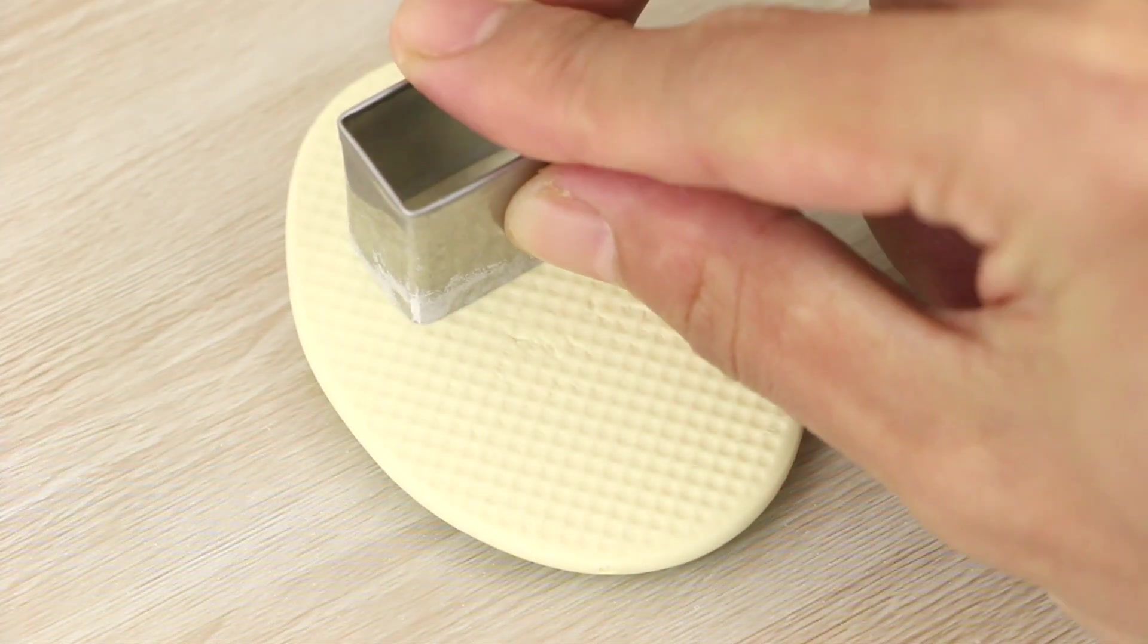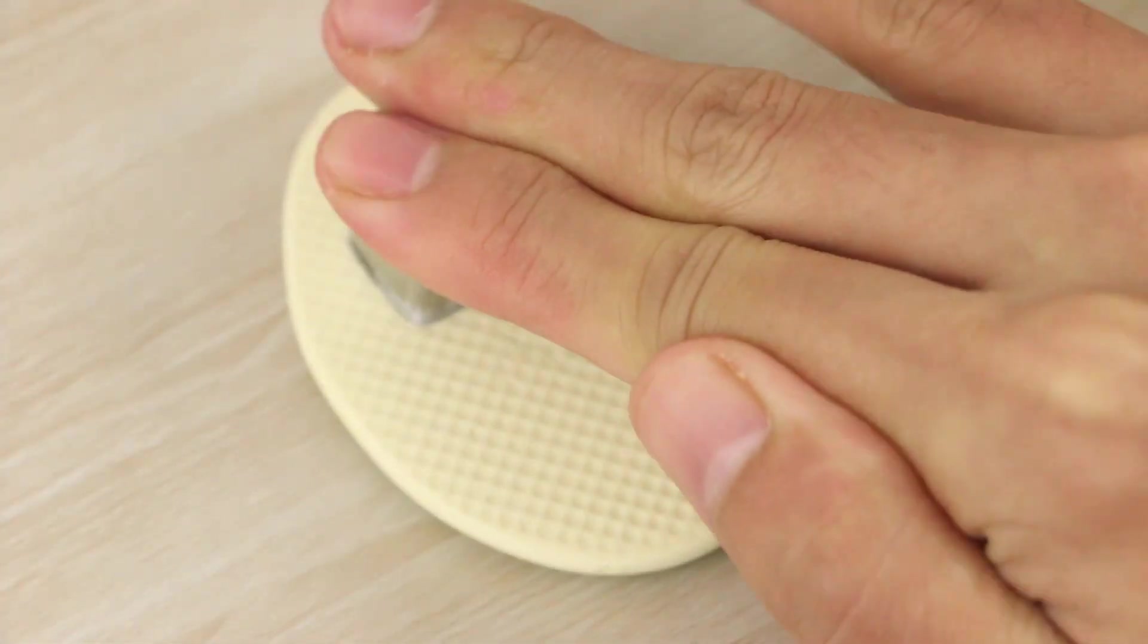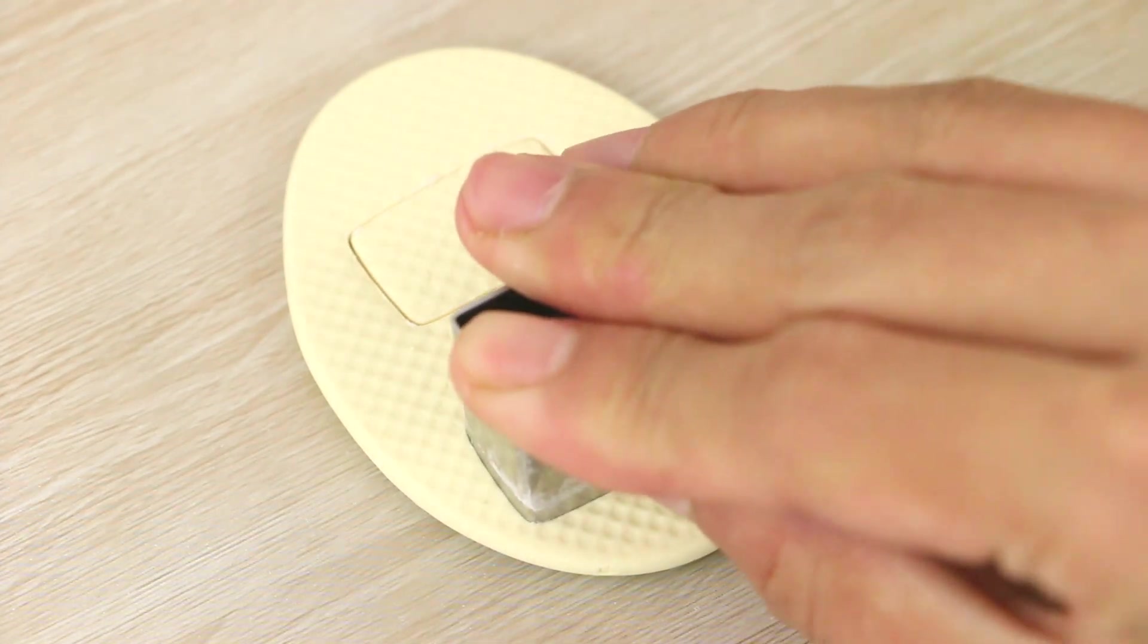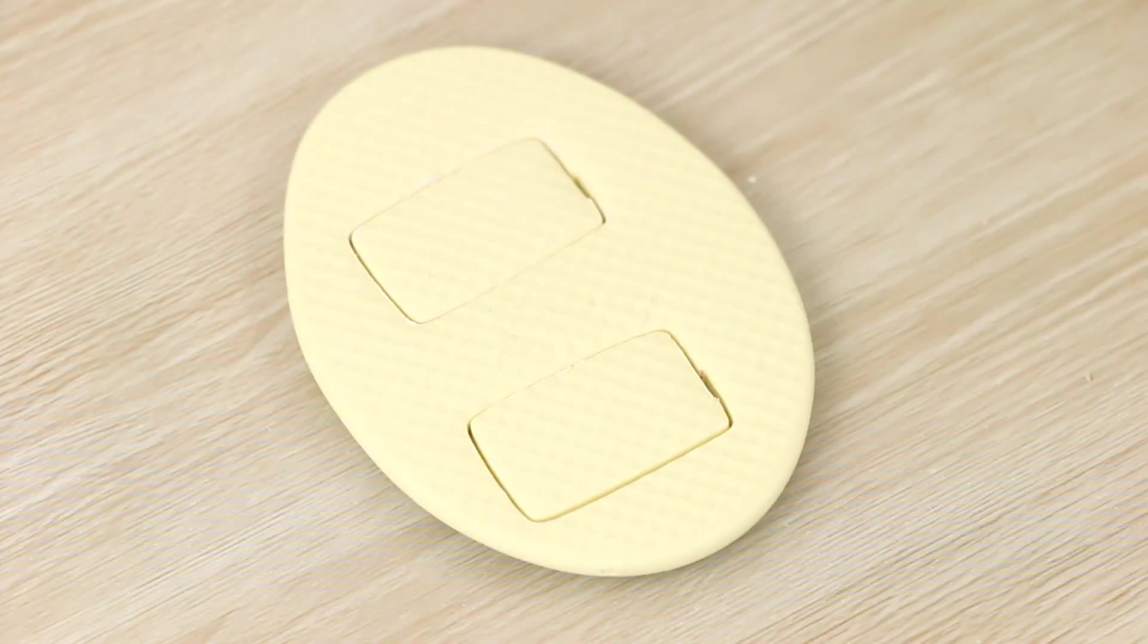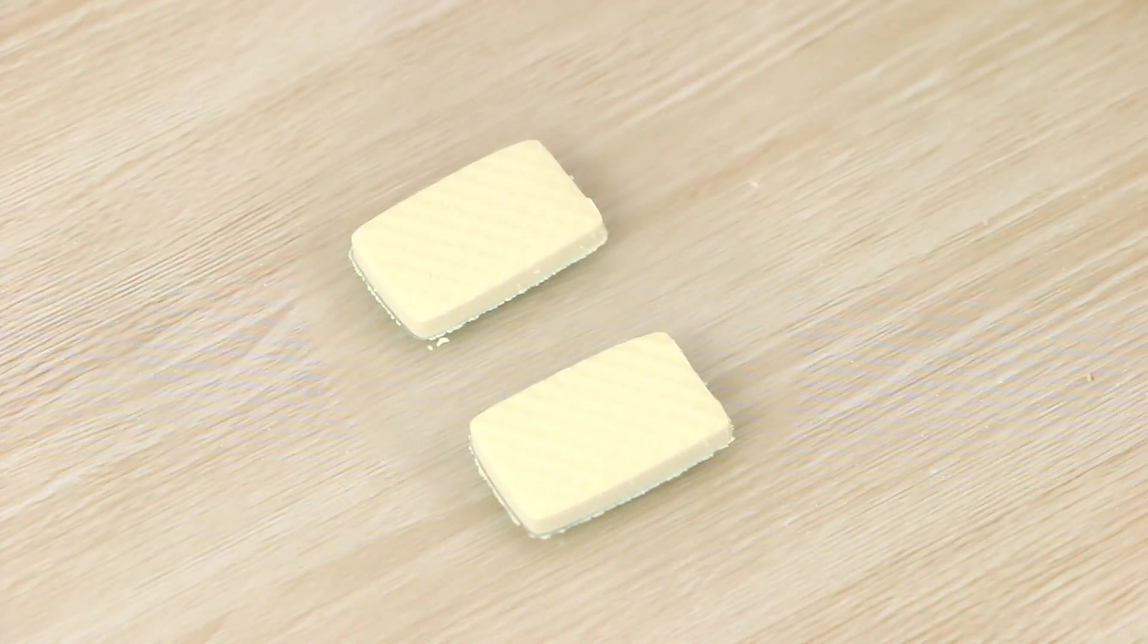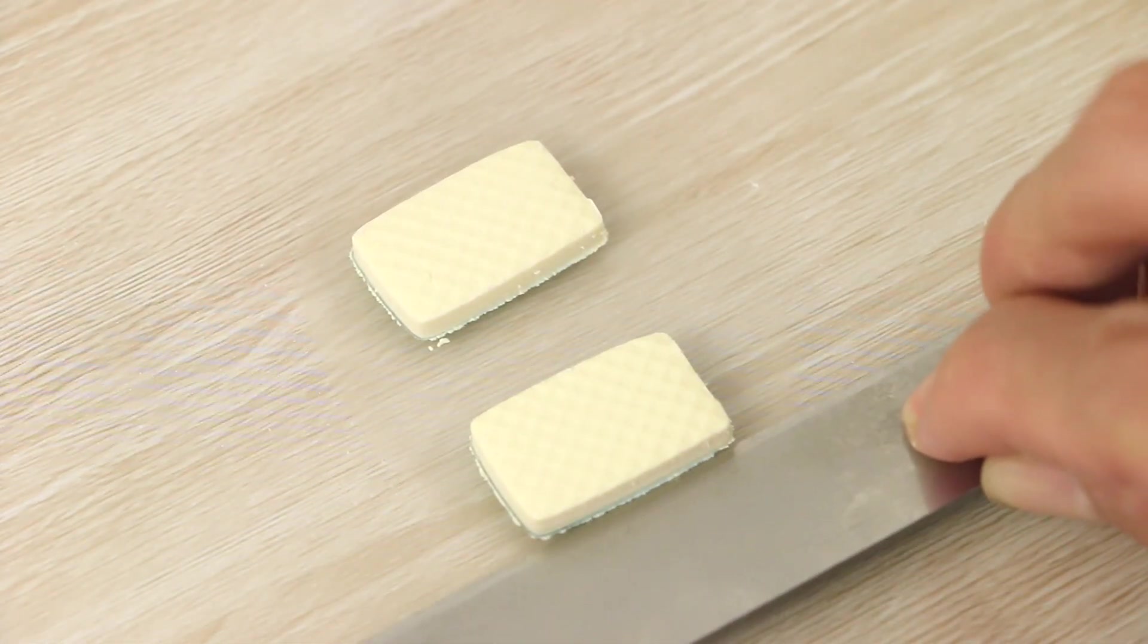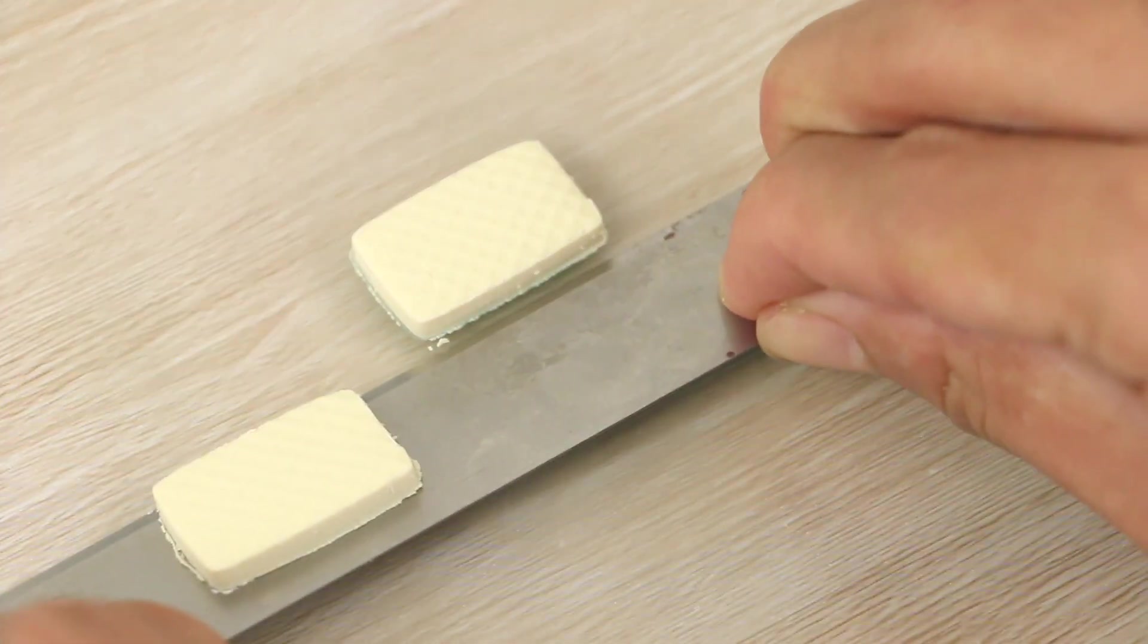And then using the same cookie cutter in cornstarch, I'm cutting out two pieces horizontally. And then just peeling away the excess and removing them off my work surface. And then I'm also going to go ahead and poke the hole for the eye pin to go into, just doing this on one rectangle.